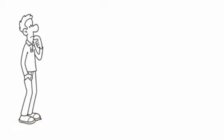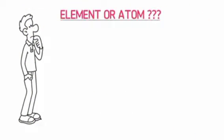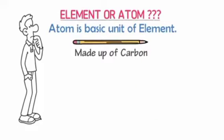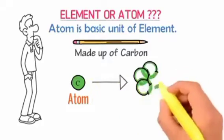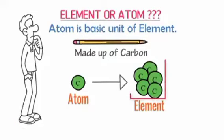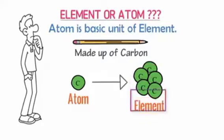What is an atom? An atom is the basic unit of an element. For example, look at that pencil — a pencil is made up of carbon. Carbon has many carbon atoms, and those carbon atoms can be broken down into carbon elements.